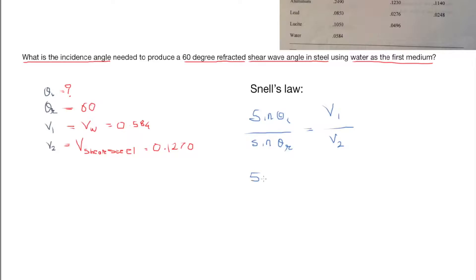So sine of incident angle over sine of 60 is equal to velocity in first medium, which is water, which is 0... hold on, it should be 0.0584 divided by 0.1270.